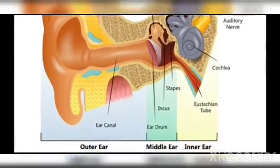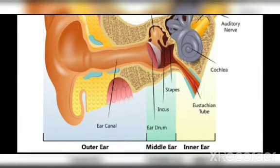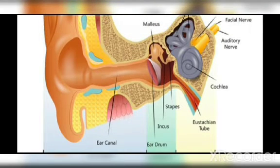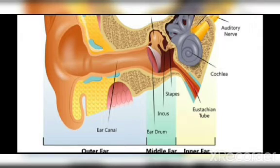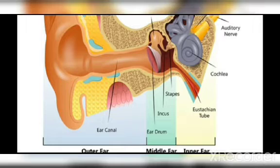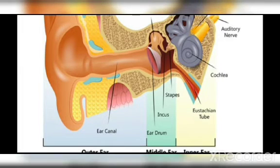Coming to the middle ear — in the middle ear you would have the eardrum, along with stapes, malleus, and incus. We focus on the eardrum, which is a stretched muscular sheet-like structure. When sound waves come and hit the eardrum, it produces vibrations. These vibrations cause the sound to be heard by us. The sound waves hit the stretched muscular eardrum and produce vibrations — this is what happens in the middle ear.